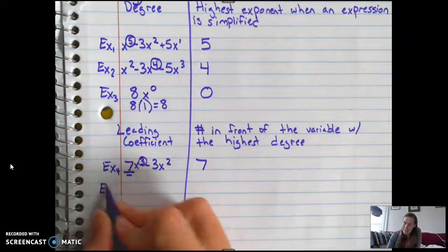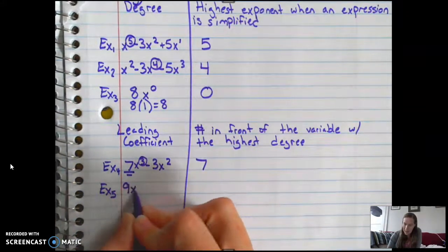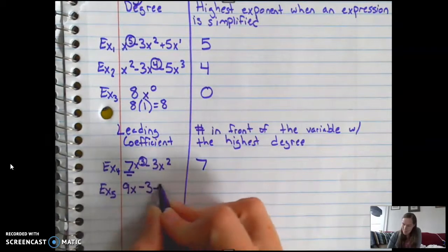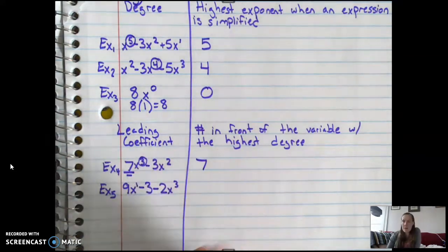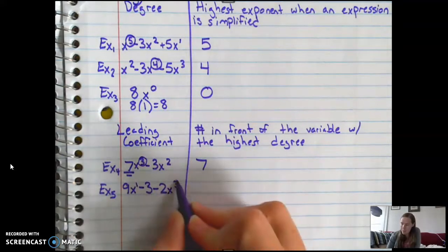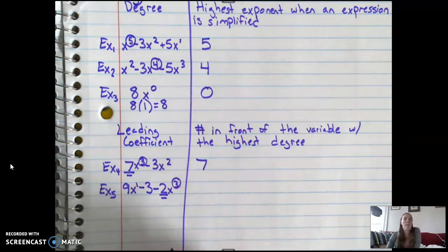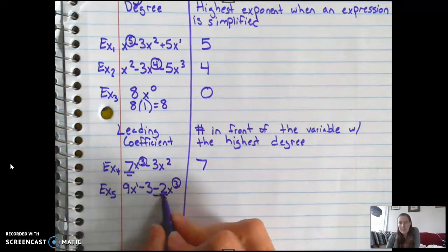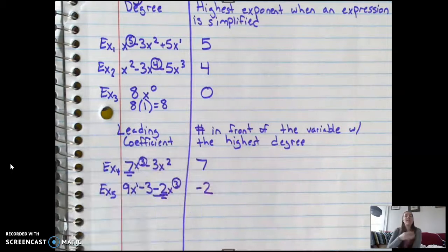Our last example before we do something with this new knowledge is, say we had 9x minus 3 minus 2x cubed. So what do you think the degree is? What do you think the leading coefficient is? So the degree of this polynomial, remember that's an implied 1, this would be a 0, this would be a 3. So it's degree 3. The number in front is a 2. But wait, there's also this minus sign, which we need to include. So the leading coefficient is a negative 2.